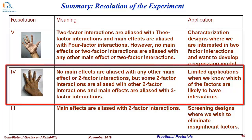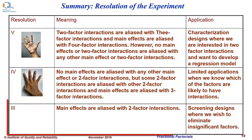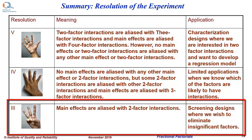Resolution 4 designs: no main effects are aliased with any other main effects or two-factor interactions, but some two-factor interactions are aliased with other two-factor interactions and main effects are aliased with three-factor interactions. Application: limited applications, when we know which of the factors are likely to have interactions. Resolution 3 designs: main effects are aliased with two-factor interactions. Application: screening designs, where we wish to eliminate insignificant factors out of many other factors.